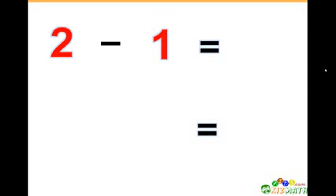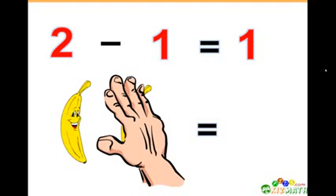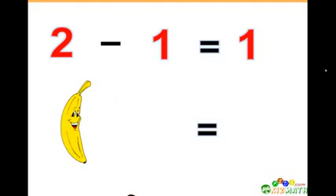Two minus one equals one. If we have two bananas and we take away one banana, we have only one banana left.